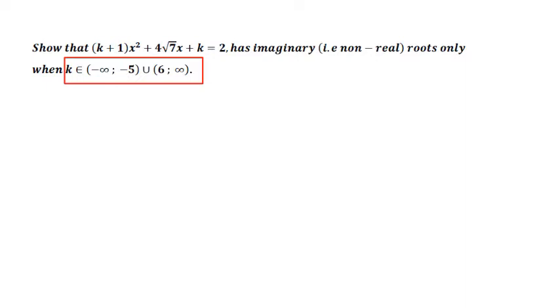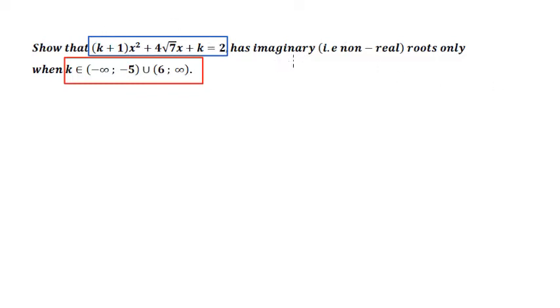This shouldn't be a question you really struggle with. The only thing that would make you stumble is not knowing how to determine the nature of roots of a quadratic equation, because that's essentially what they're asking. If you rephrased this question, it's the same as asking you to find the value of K such that this quadratic — K plus 1 times X squared plus 4 root 7 X plus K equals 2 — has non-real roots.